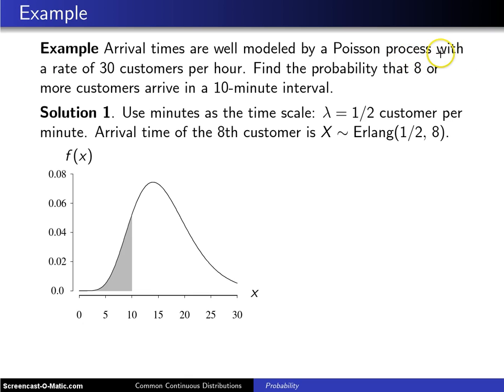The rate is 30 customers per hour. Find the probability that eight or more customers arrive in a 10-minute interval. At this point, because you have two different units—hours and minutes—you have to decide between the two.